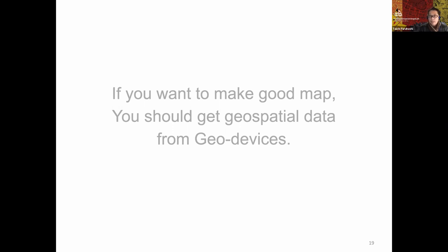If you want to make a good map, you should get geospatial data from geo devices. Many times you can bring your smartphone — Android or iOS — since a general smartphone has GPS. If you want to check your correct position, it's very easy. And also if you have a good device like a 360-degree panorama camera or a drone with a camera, you can capture the field situation and environmental conditions. If you can use a drone, you can take aerial photo data by hand.